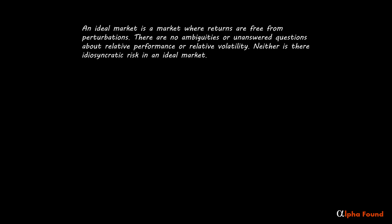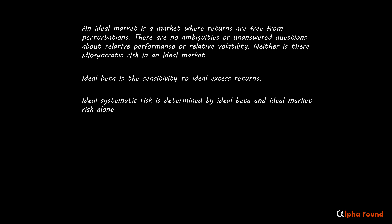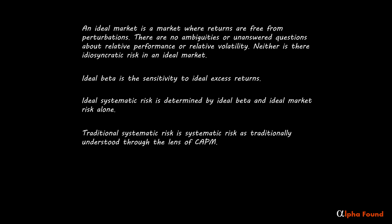An ideal market is a market where returns are free from perturbations. There are no ambiguities or unanswered questions about relative performance or relative volatility. Neither is there idiosyncratic risk in an ideal market. Ideal beta is the sensitivity to ideal excess returns. Ideal systematic risk is determined by ideal beta and ideal market risk alone. Traditional systematic risk is systematic risk as traditionally understood through the lens of CAPM. Borrowing a phrase from traditional capital market theory, ideal systematic risk is the only risk that gets rewarded over time.